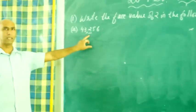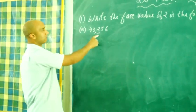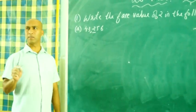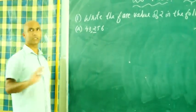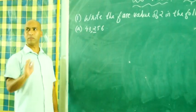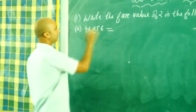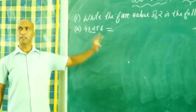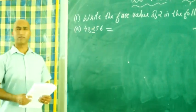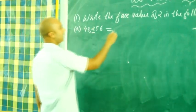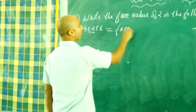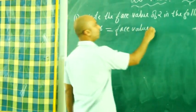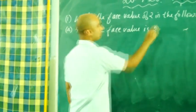2 is underlined. So it is in what case? It is in hundreds case. So here you don't have to see the case. Whatever is underlined, that number itself will be its face value. 2 is underlined, so face value is 2.